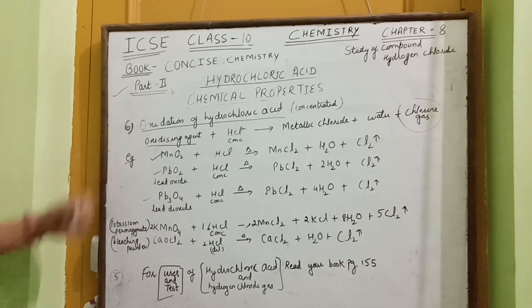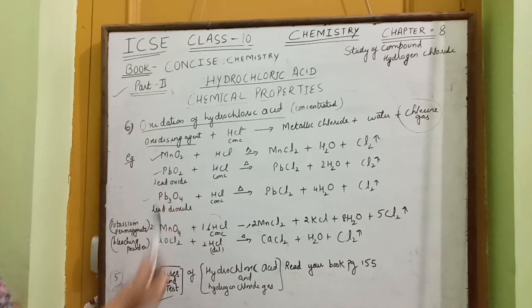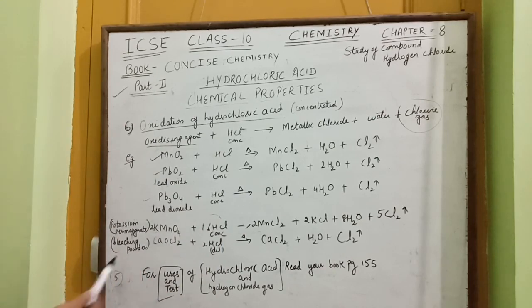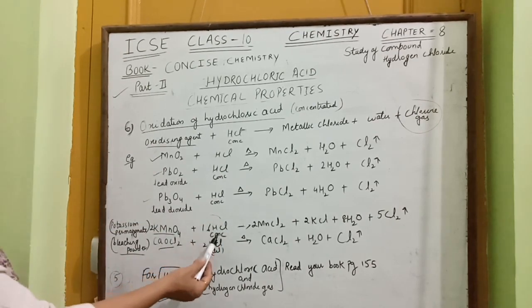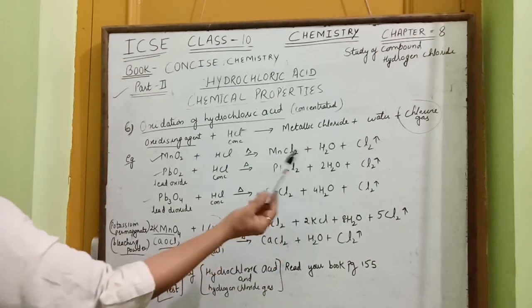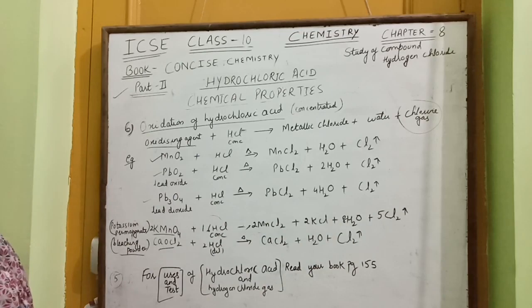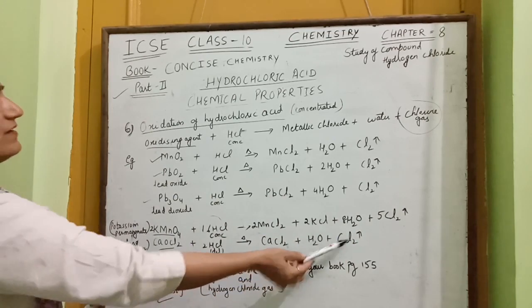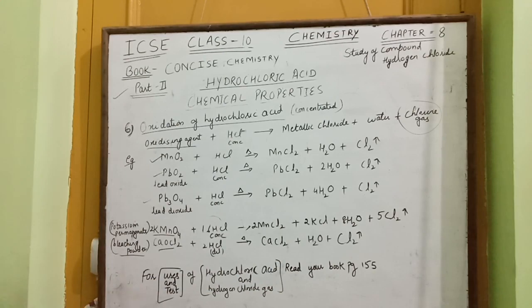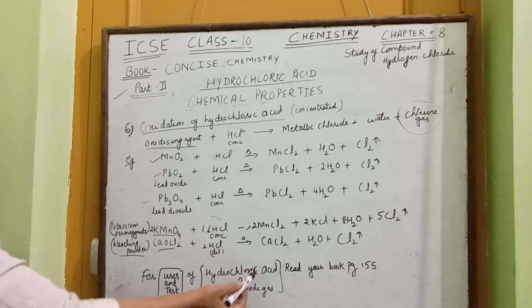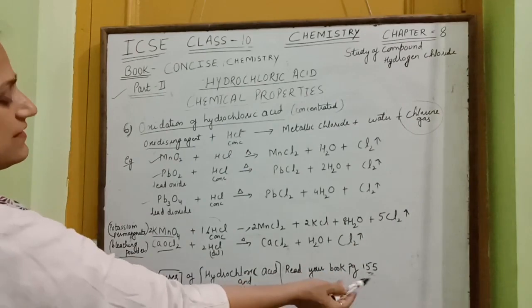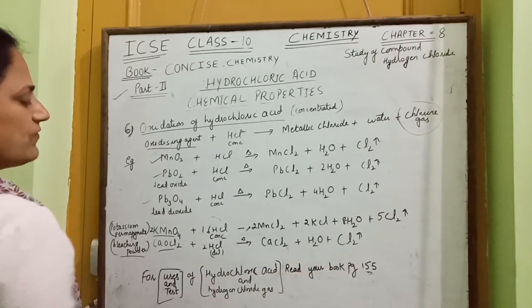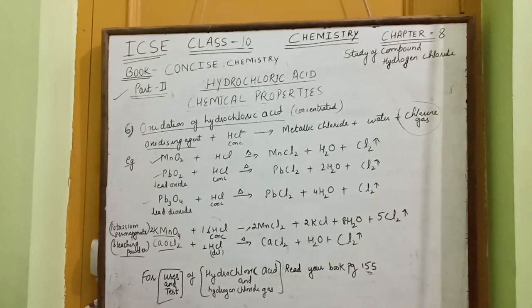The same oxidation reaction occurs when concentrated hydrochloric acid is added to potassium permanganate or bleaching powder. With potassium permanganate, the products are manganese chloride, potassium chloride, water, and chlorine gas. With bleaching powder, the products are calcium chloride, water, and chlorine gas. For uses and tests of hydrochloric acid and hydrogen chloride gas, please read Selena Concise Chemistry, page 155, chapter 8.